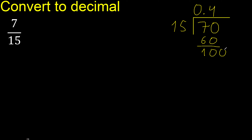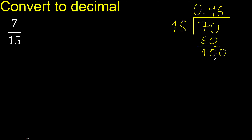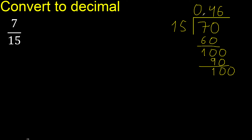There is no number, so complete with 0. The decimal point is placed here — 0 point. 15 multiplied by 7 is greater; multiplied by 6 is 90. Subtract, and complete with 0. The point is here.